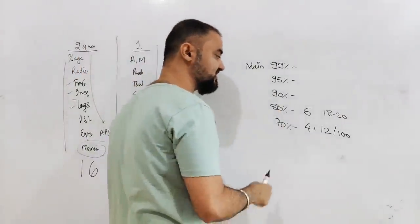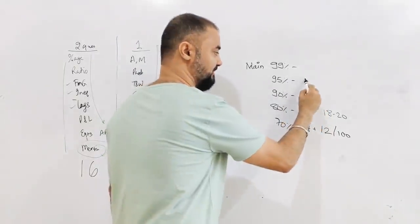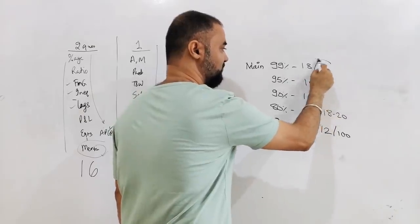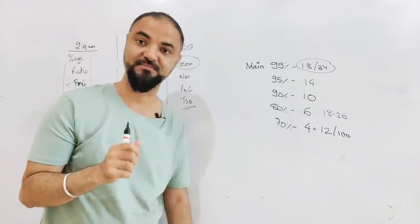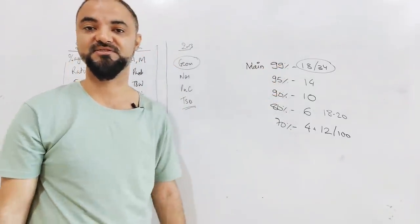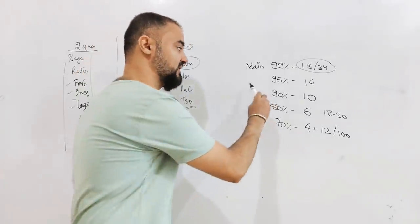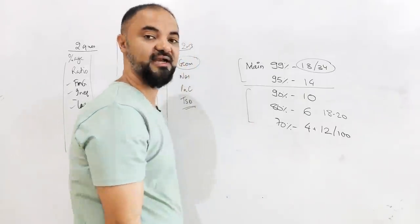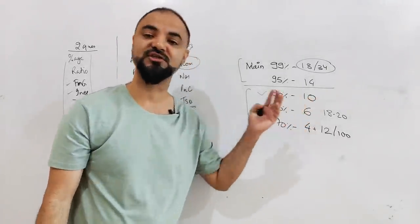90 percentile is where the main magic starts. Number of questions correct is 10. Number of questions correct: 95 percentile is 14, 99 percentile is 18. So 18 out of 34 - 50% of the paper. If you are able to solve correctly, not attempt but correct, you are getting 99 percentile. That's the target if you are very good in math. But if you're not, these are the targets. If you are good in math, these are the targets. If you're not that good in math and just want to clear the cutoff, do 10 questions correctly.